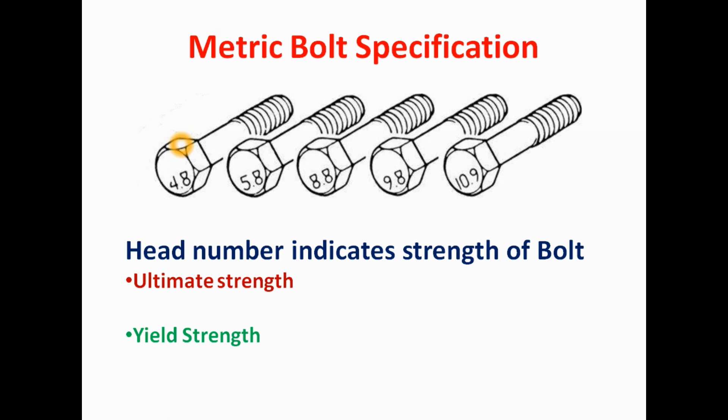From these two digits, we can calculate the strength of the bolt: ultimate strength and yield strength. Now we will see how we can calculate. What is the formula for calculating this ultimate strength and yield strength from this number.